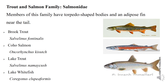Sunfish fins often have both soft rays and stiff spines that provide protection from predators. Members of this family include black crappie, bluegill, green sunfish, largemouth bass, pumpkinseed and smallmouth bass. Salmon is the common name for several species of ray-finned fishes in the family Salmonidae. Members of this family have torpedo-shaped bodies and an adipose fin. They are also considered anadromous, meaning they live in both fresh and salt water, and when it is time to spawn they head back to freshwater. Other fish in the same family include brook trout, coho salmon, lake trout and lake whitefish.